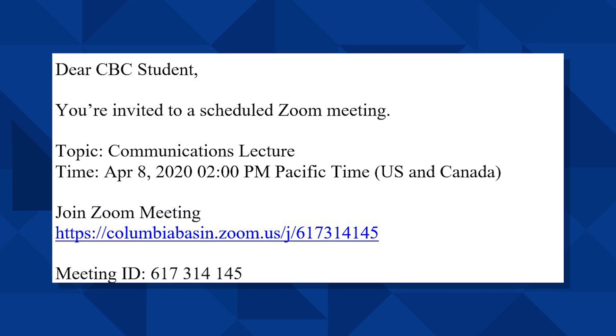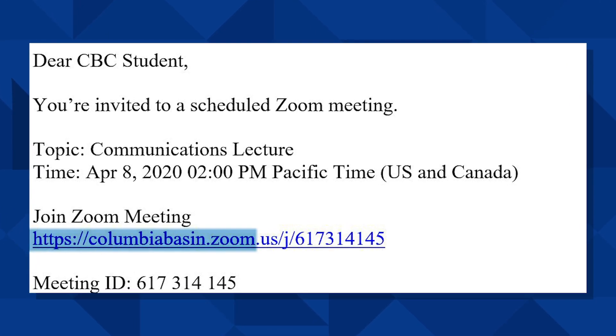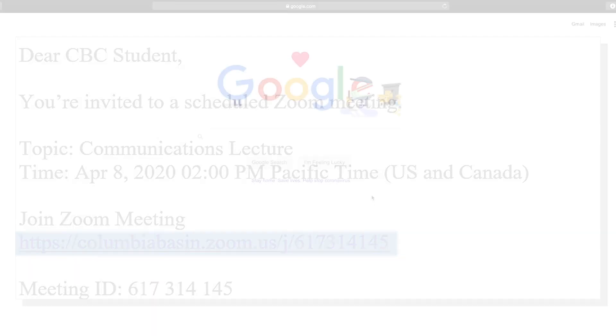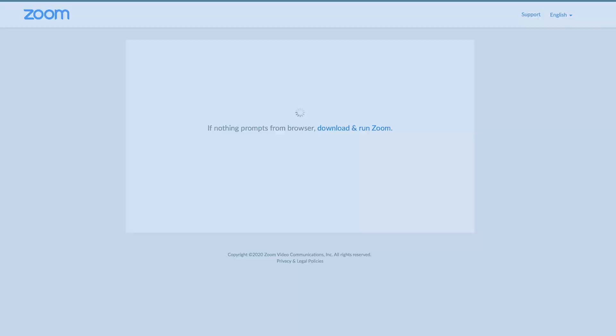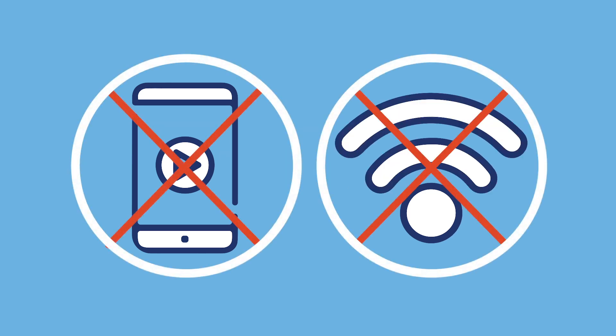To begin, your instructor should have shared a meeting invitation or join URL with you. Using this information, navigate to the URL using a web browser. While you can use the Zoom app on your mobile device and cellular connection, you will get the best performance from a laptop or home computer and home internet connection in Zoom.